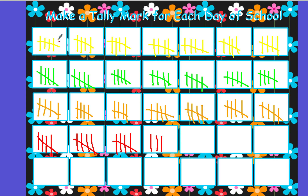Counting by fives: 5, 10, 15, 20, 25, 30, 35, 40, 45, 50, 55, 60, 65, 70, 75, 80, 85, 90, 95, 100, 105, 110, 115, 120, 121, 122, 123, and 124.